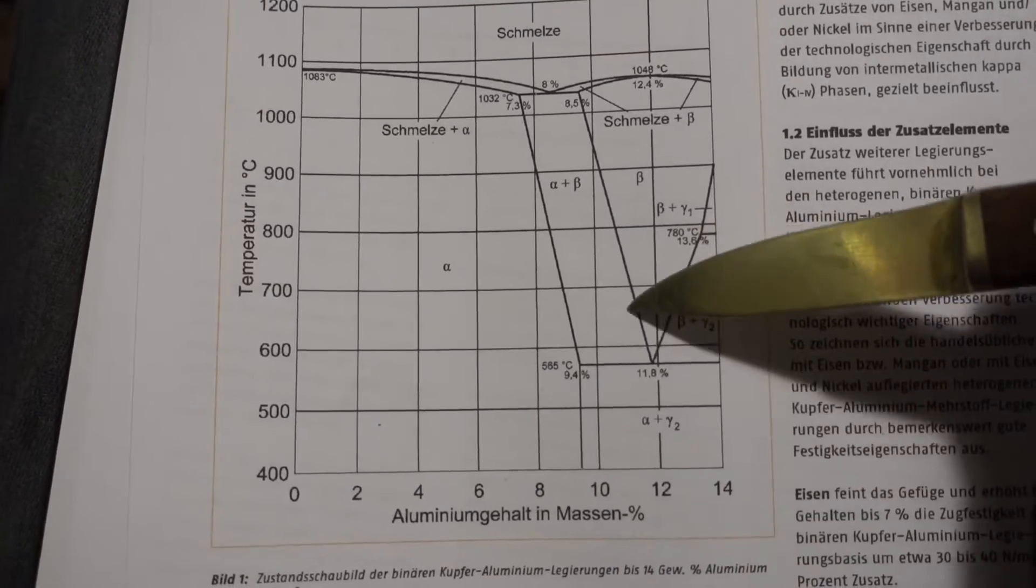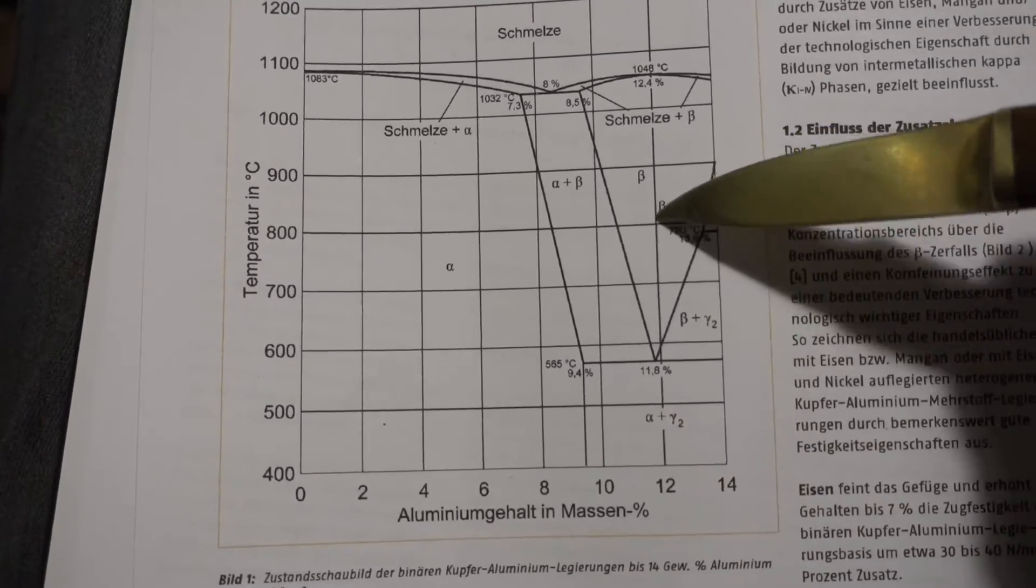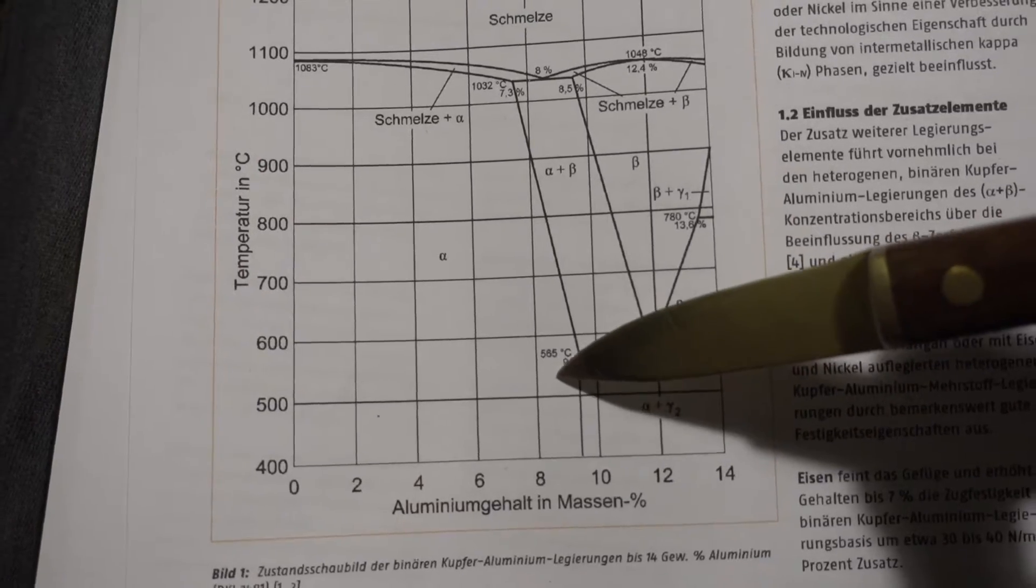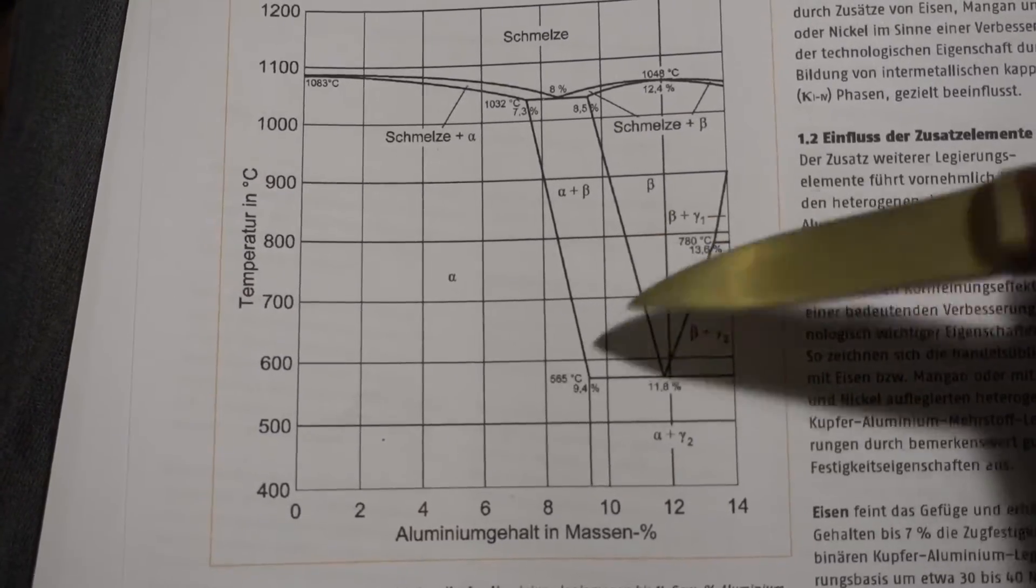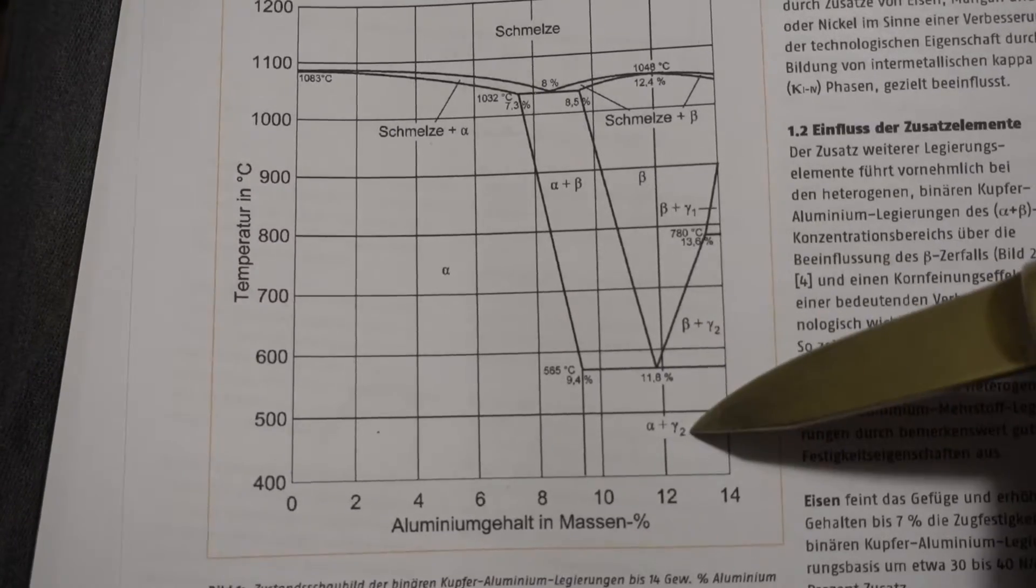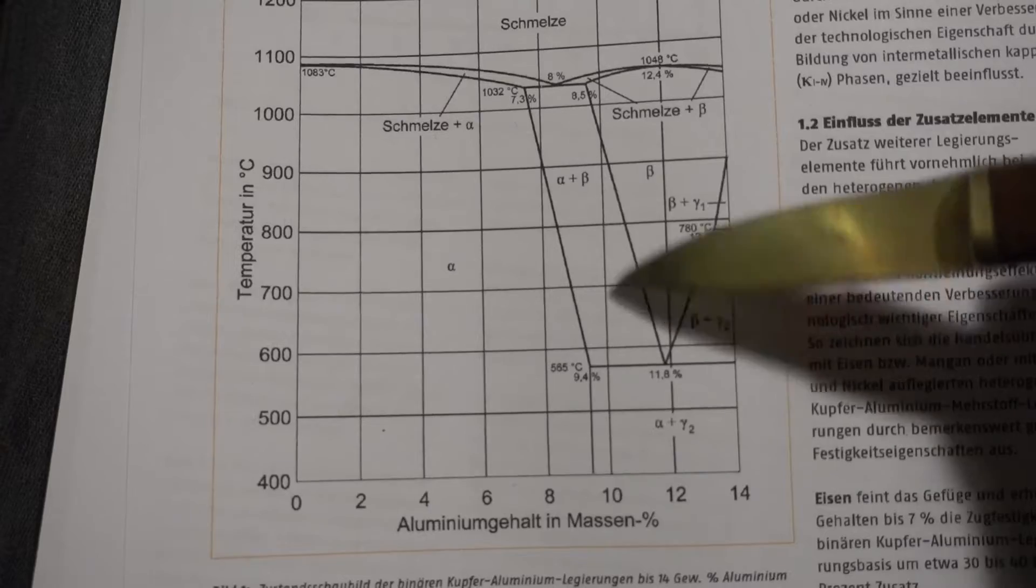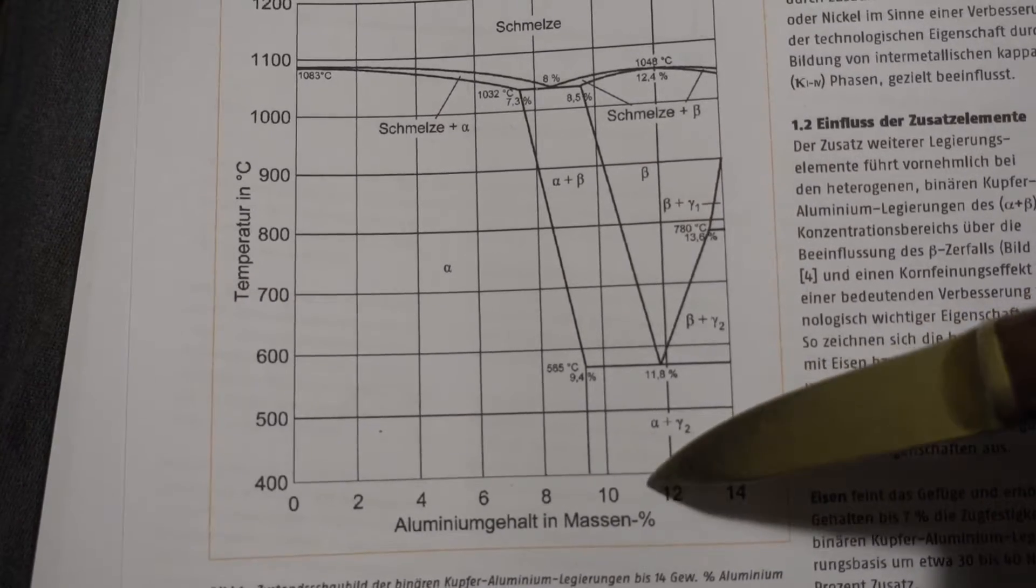It depends on the cooling speed. So what I think happened here - I'm way in that region where I have a lot of that hard gamma and beta and not much of the alpha that kind of works like cement. So this is hard, brittle, and basically unusable and unmachineable.